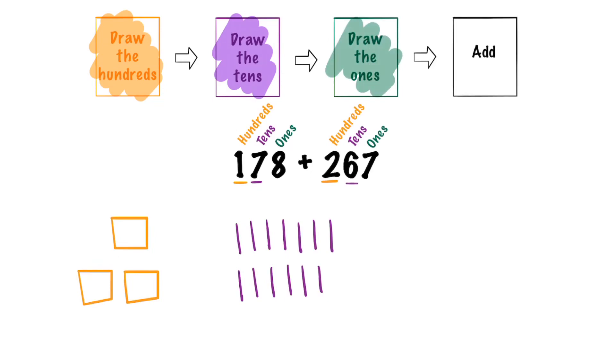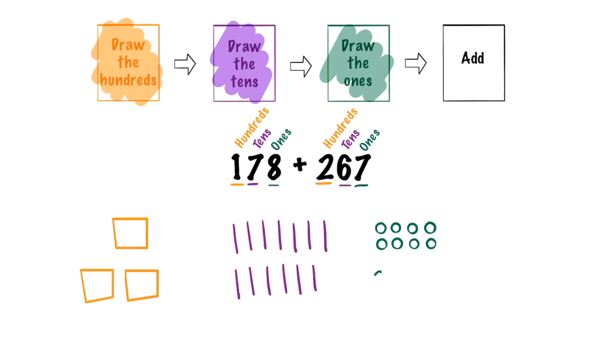Now let's draw the ones. On our first number we have an 8 in the ones place which means we need 8 ones. In the next number we have a 7 in the ones place so we need 7 ones.